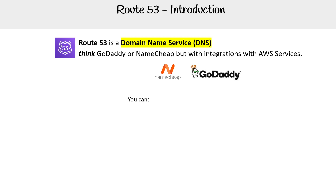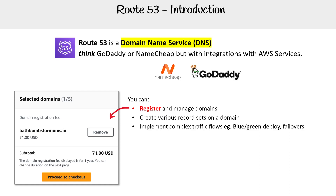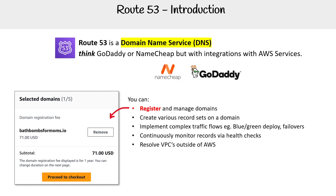So what can you do with Route 53? Well, you can register and manage domains, create various record sets on a domain, implement complex traffic flows, continuously monitor records with health checks, and resolve VPCs outside of AWS. So let's say you need to have some resolution with your on-premise stuff — this is all stuff that you can do.